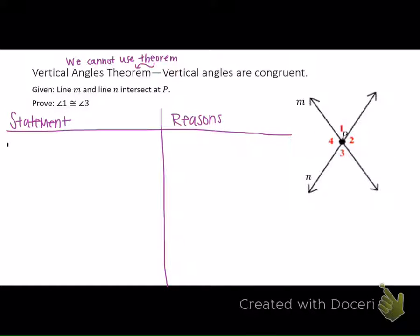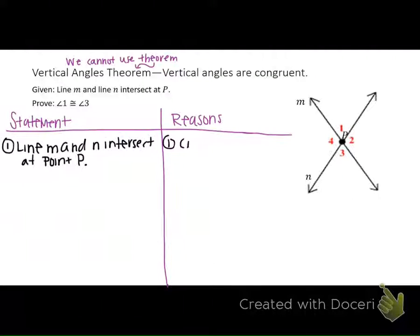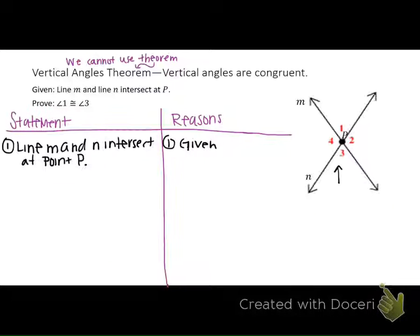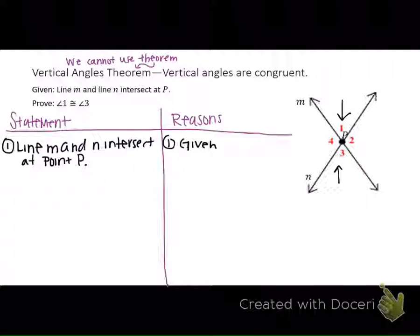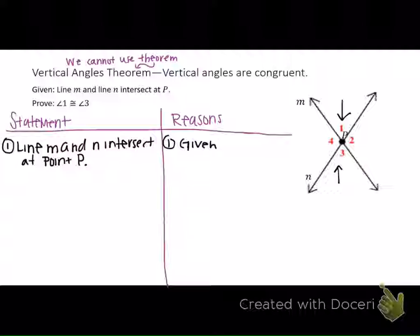So number one — what do we always write down first? Lines M and N intersect at point P. We're trying to prove that angles one and three are congruent. Remember, the first thing you need to look at is whether there are any words in the given information that you can define. You know what intersecting means, but that's not going to help us. There's nothing like midpoint, or perpendicular, or parallel here that you would have to define. So we can't use that.